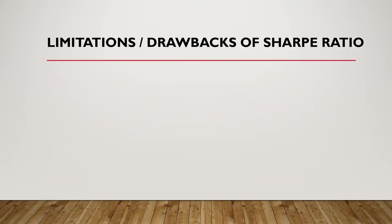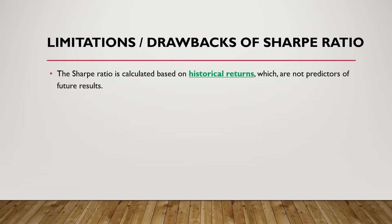Now let's talk about the downsides of the Sharpe ratio. The first downside is that the Sharpe ratio is calculated based on historical returns, meaning it uses the previous years' returns. It gives us some idea about the future, but it is not 100% predicting the future.